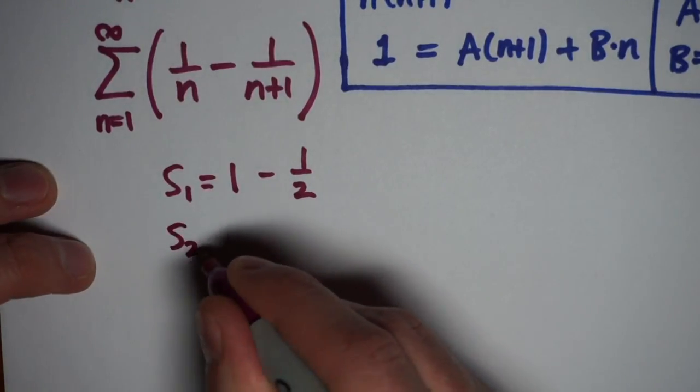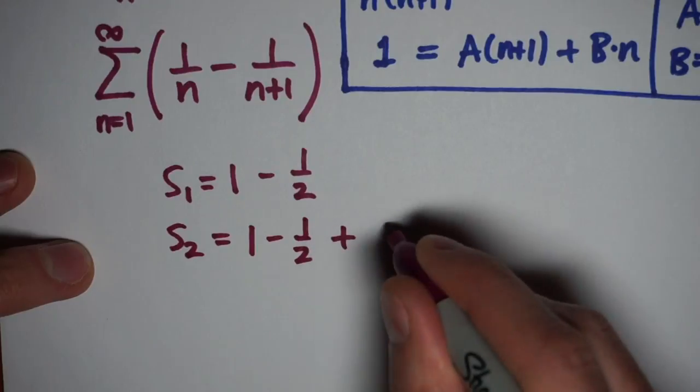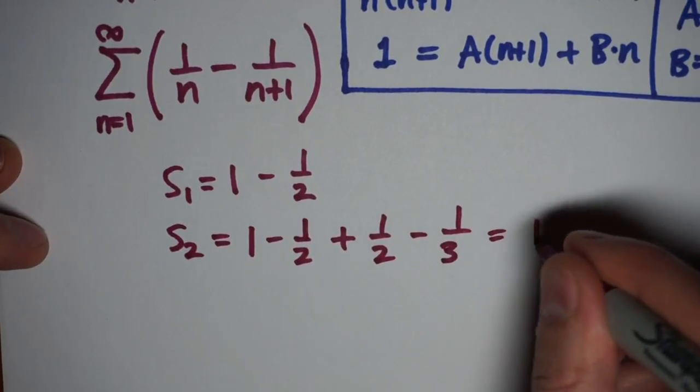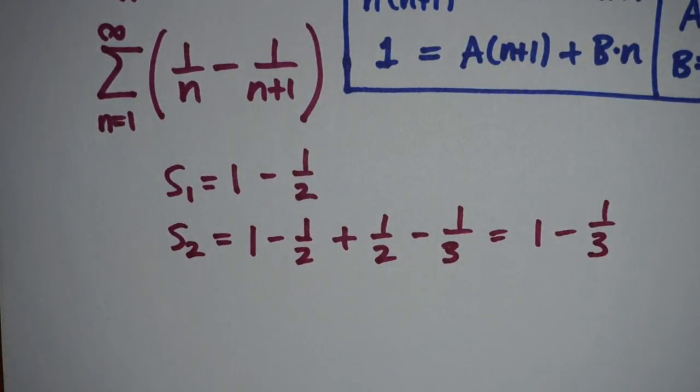s1 is one minus a half, which is just a half, but then s2 is going to be what we have here, one minus a half, plus a half minus a third. And those middle terms, the negative a half plus a half, cancel, leaving us with just one minus a third.